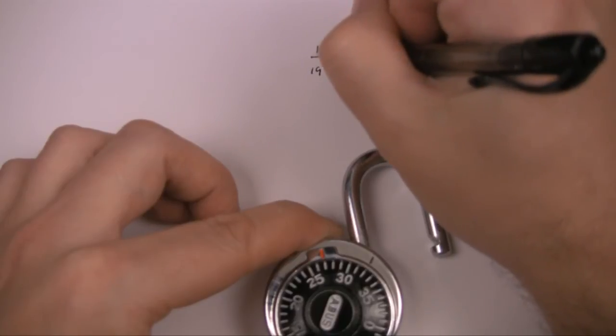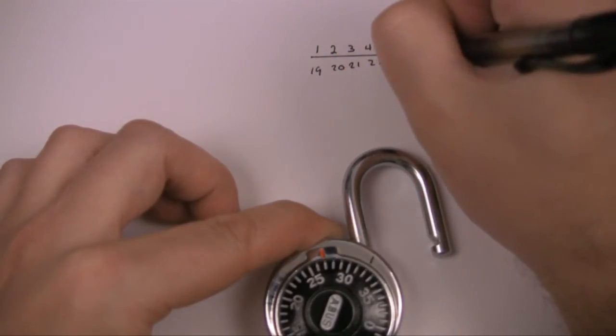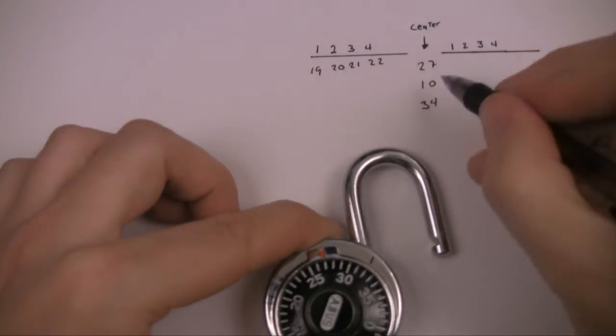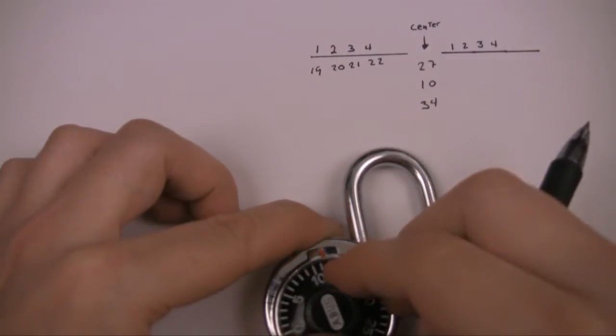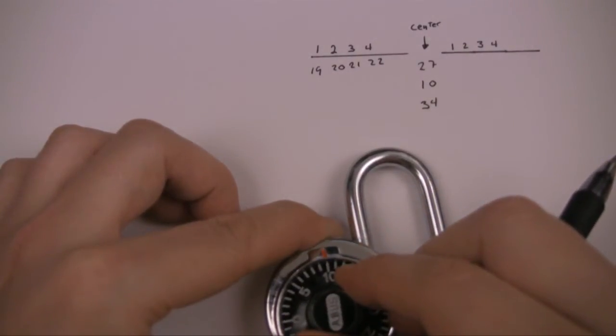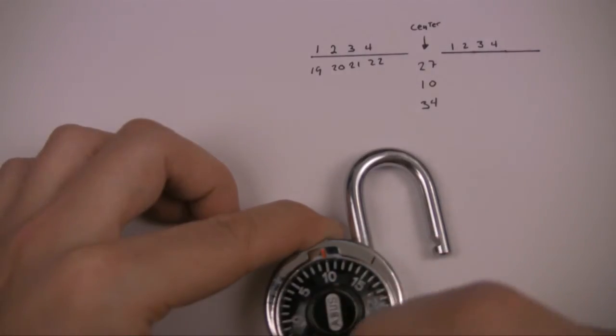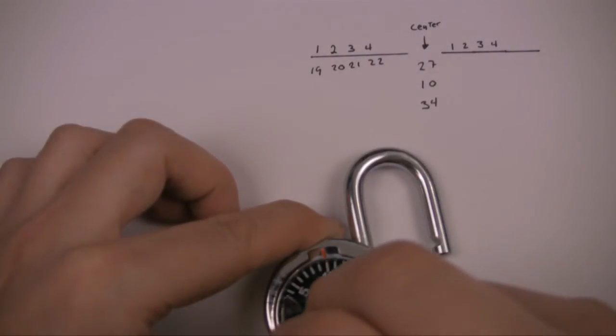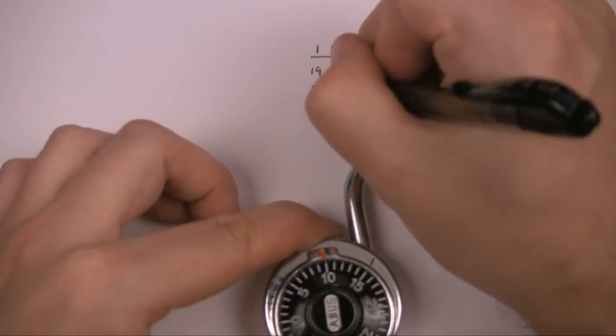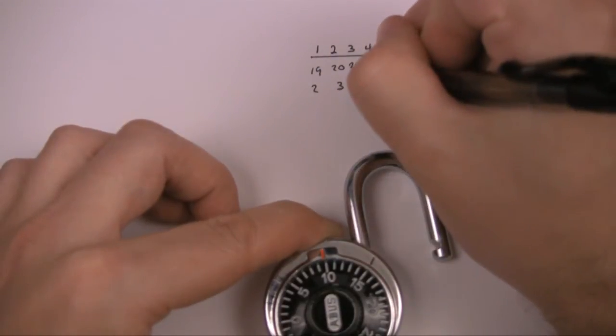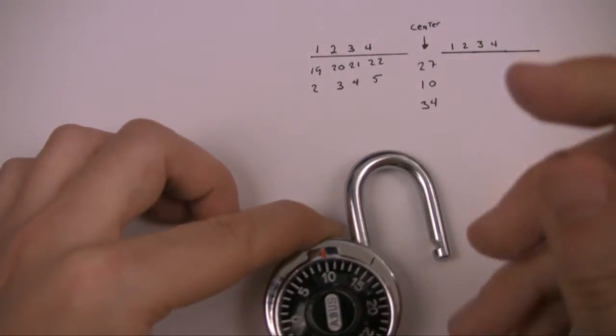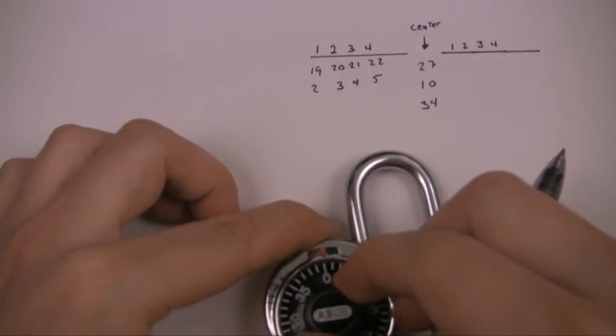So now we turn the dial, we'll do the same thing for 10, and we count out where we think the slot is. Two, three, four, and five. And then we'll do it for the last number of 34.